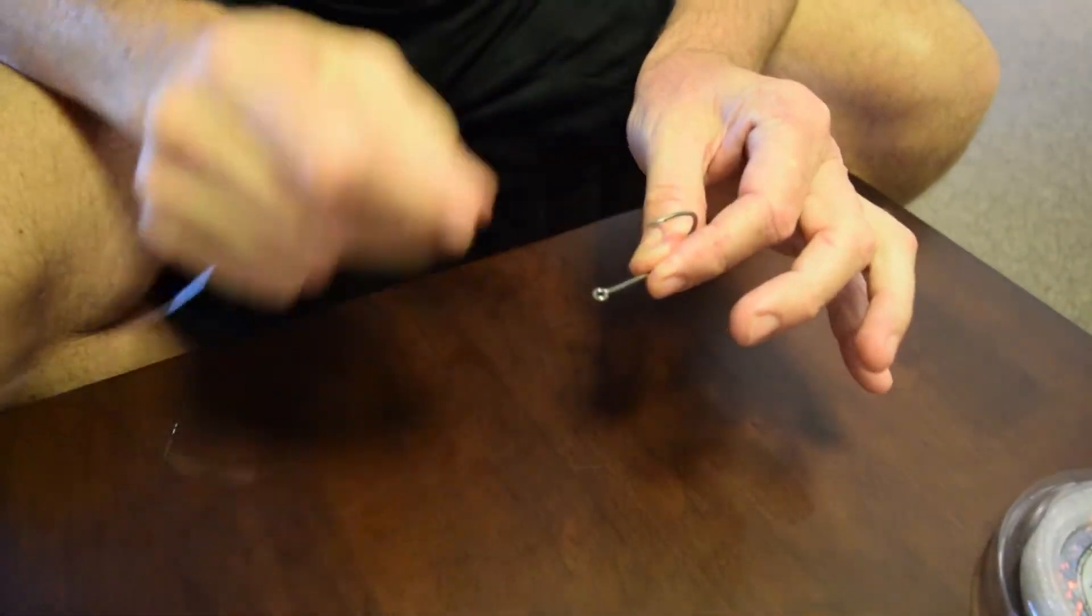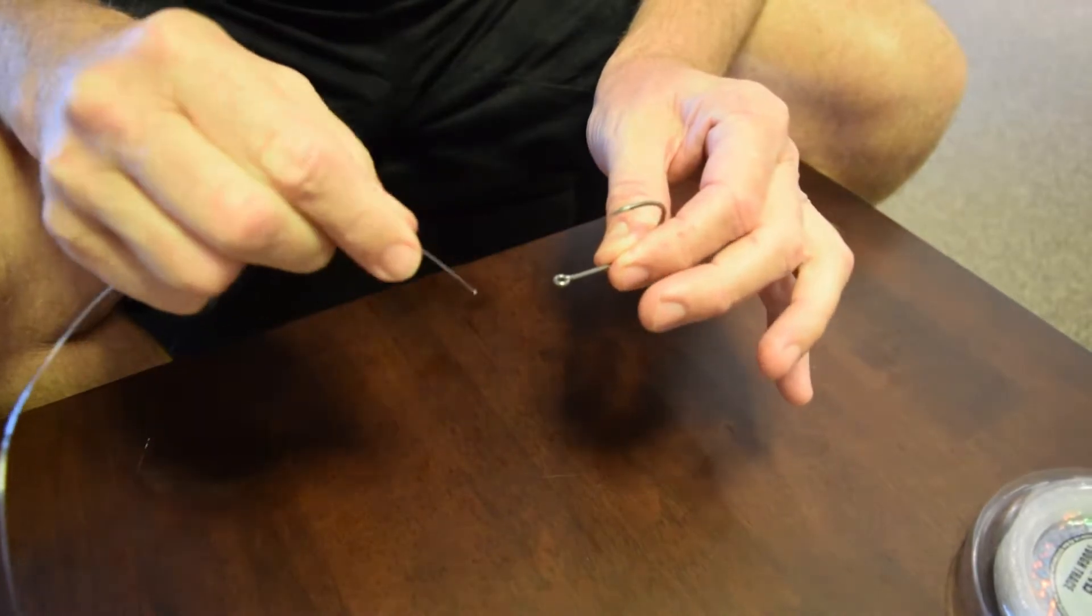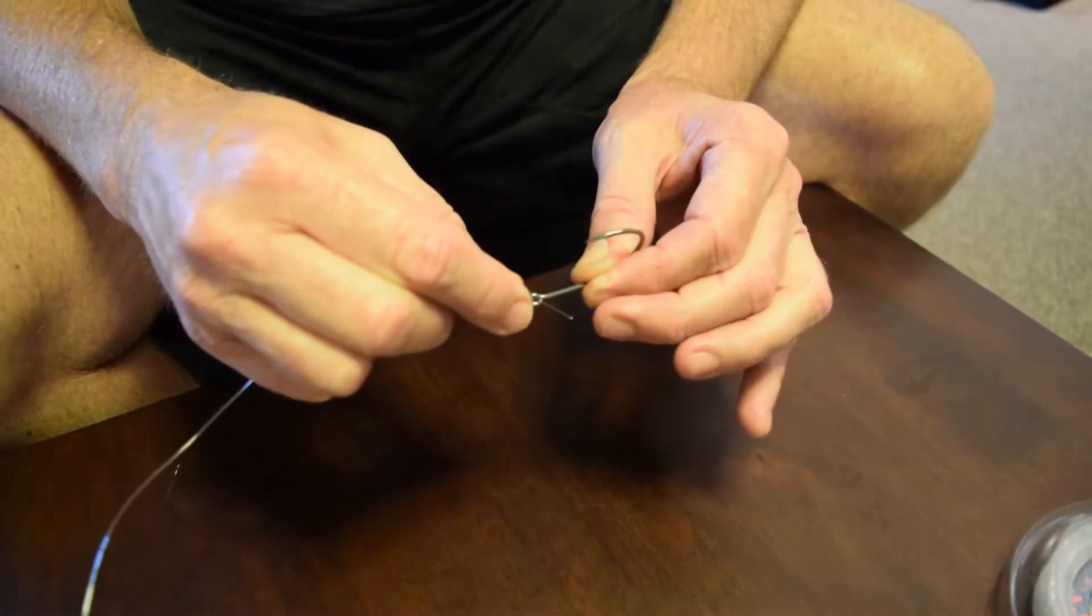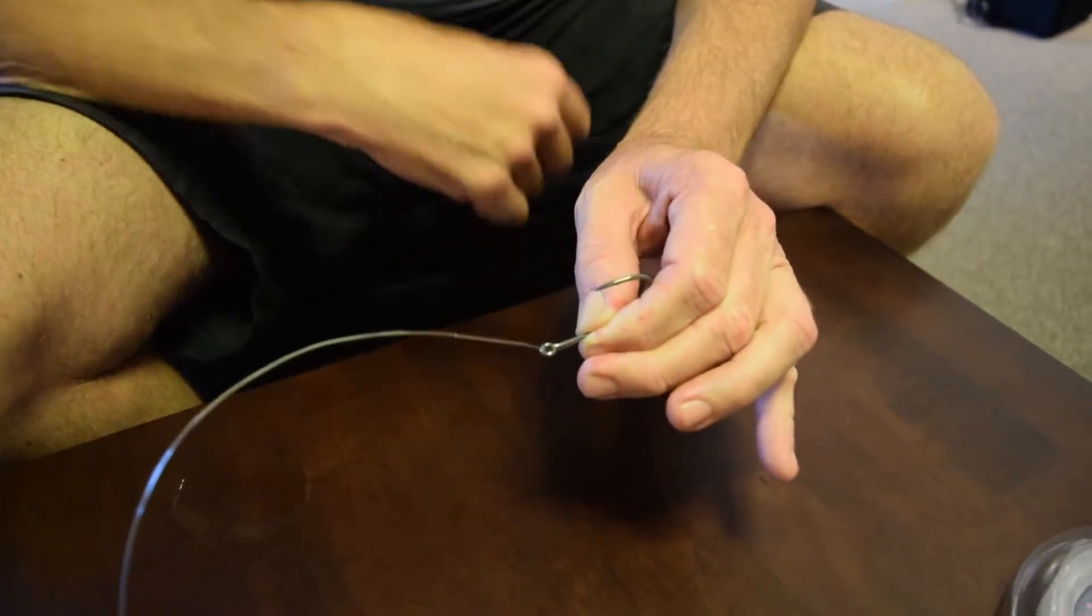Take the DX point hook, hold it with the barb up, or the gape up, come down through the eye of the hook and just pinch that on the back with your thumb and forefinger.